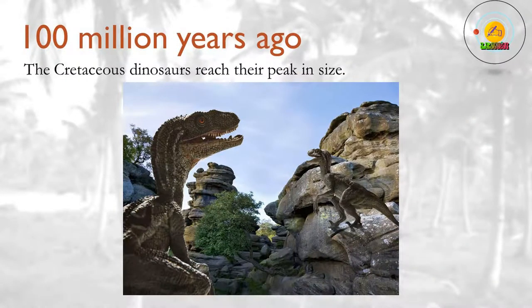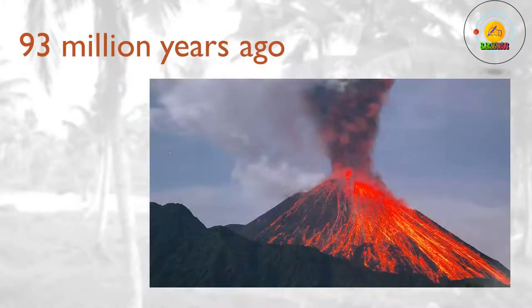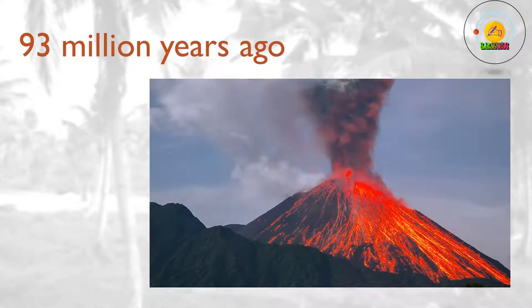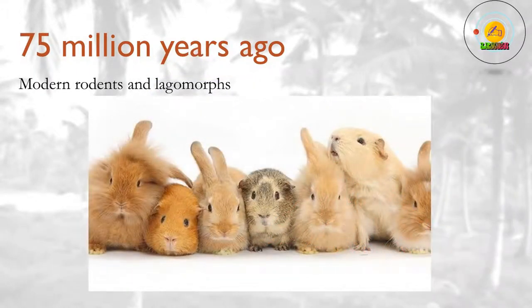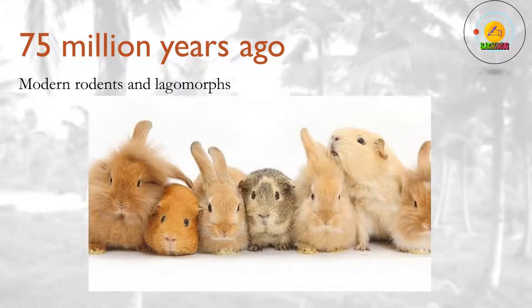100 million years ago. The Cretaceous dinosaurs reached their peak in size. The giant sauropod Argentinosaurus, believed to be the largest land animal in Earth's history, lives around this time. 93 million years ago. The oceans become starved of oxygen, possibly due to a huge underwater volcanic eruption. 27% of marine invertebrates are wiped out. 75 million years ago. The ancestors of modern primates split from the ancestors of modern rodents and lagomorphs — rabbits, hares and pikas. The rodents go on to be astonishingly successful, eventually making up around 40% of modern mammal species.